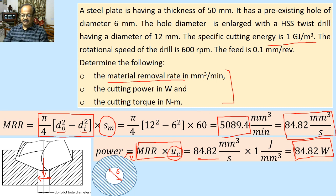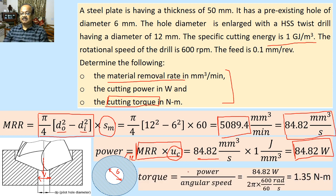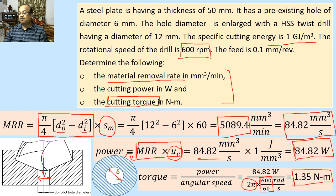Now we calculate cutting torque. We know that torque multiplied by angular speed in radians per second gives power. So torque equals power divided by angular speed. The rotational speed is 600 rpm, which is 600/60 = 10 rotations per second, multiplied by 2π to convert to radians per second. This gives a final answer of 1.35 Newton meters. So 1.35 N·m is not a very substantial torque, but this is the drilling torque required for the hole described in this problem.